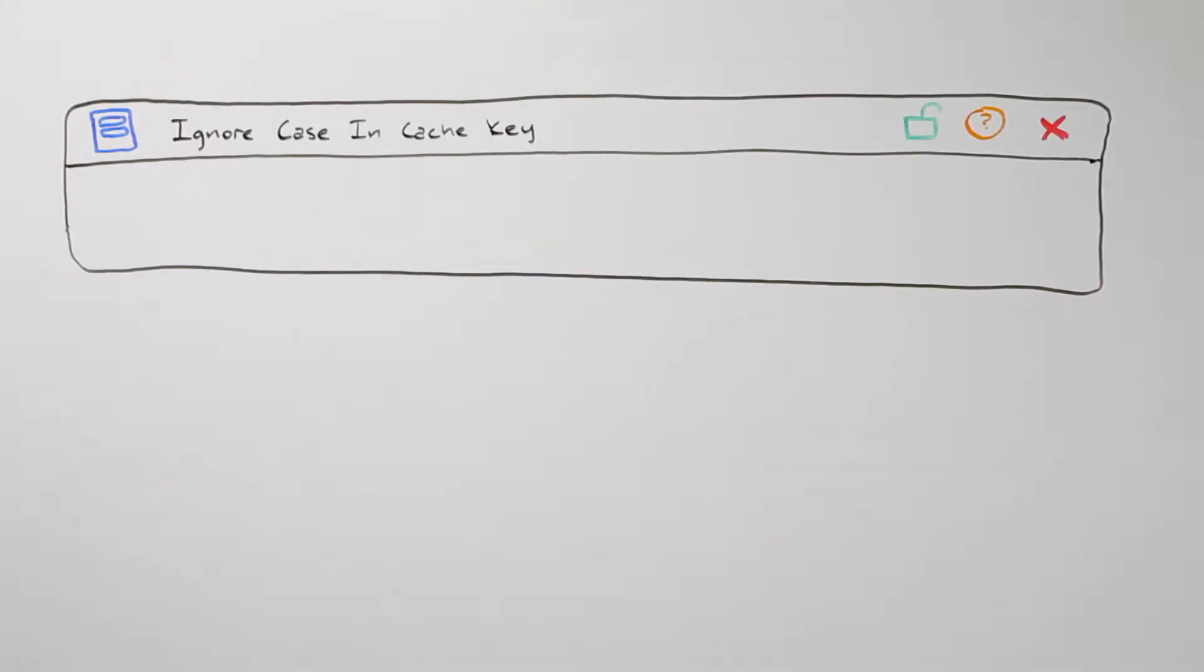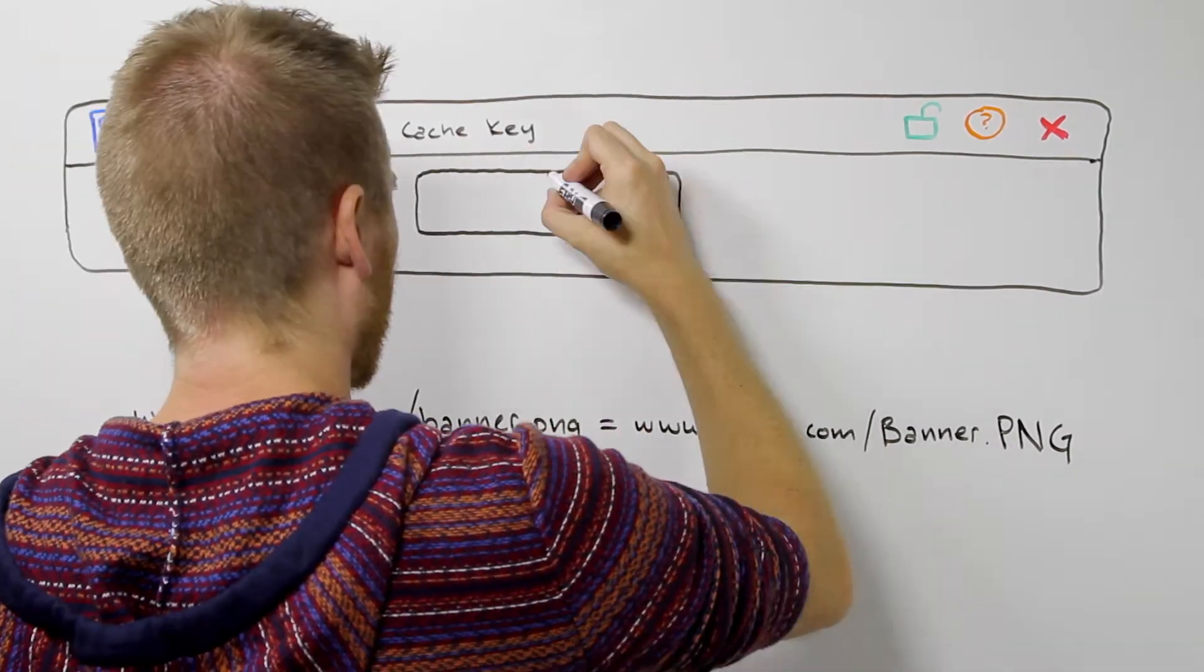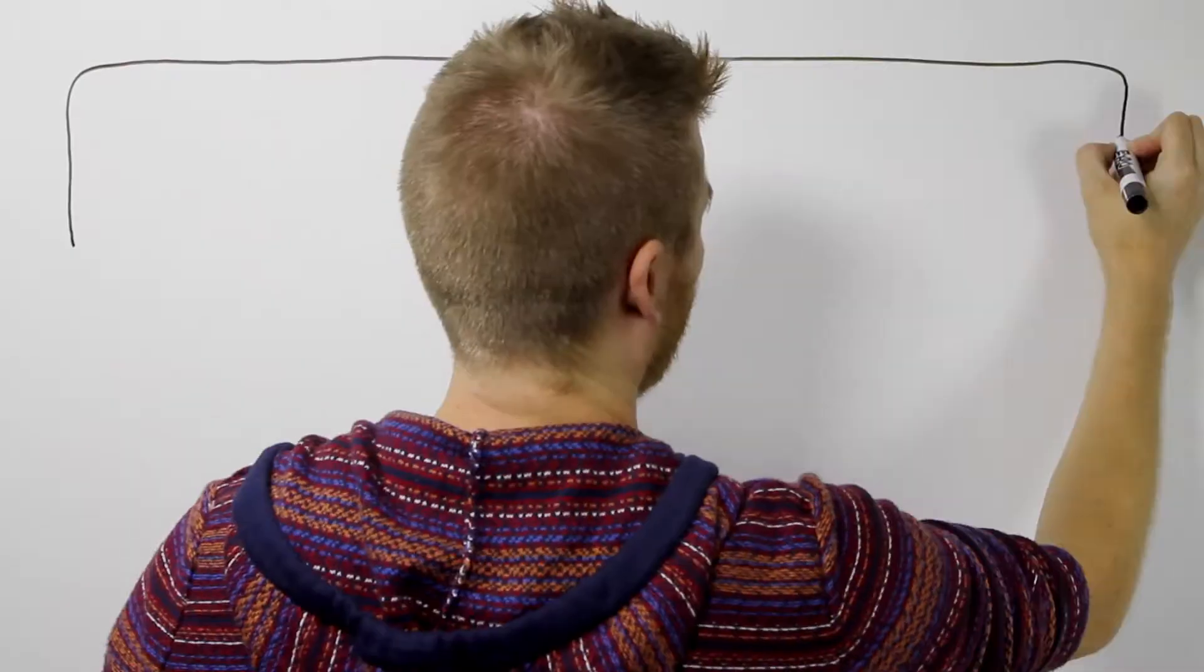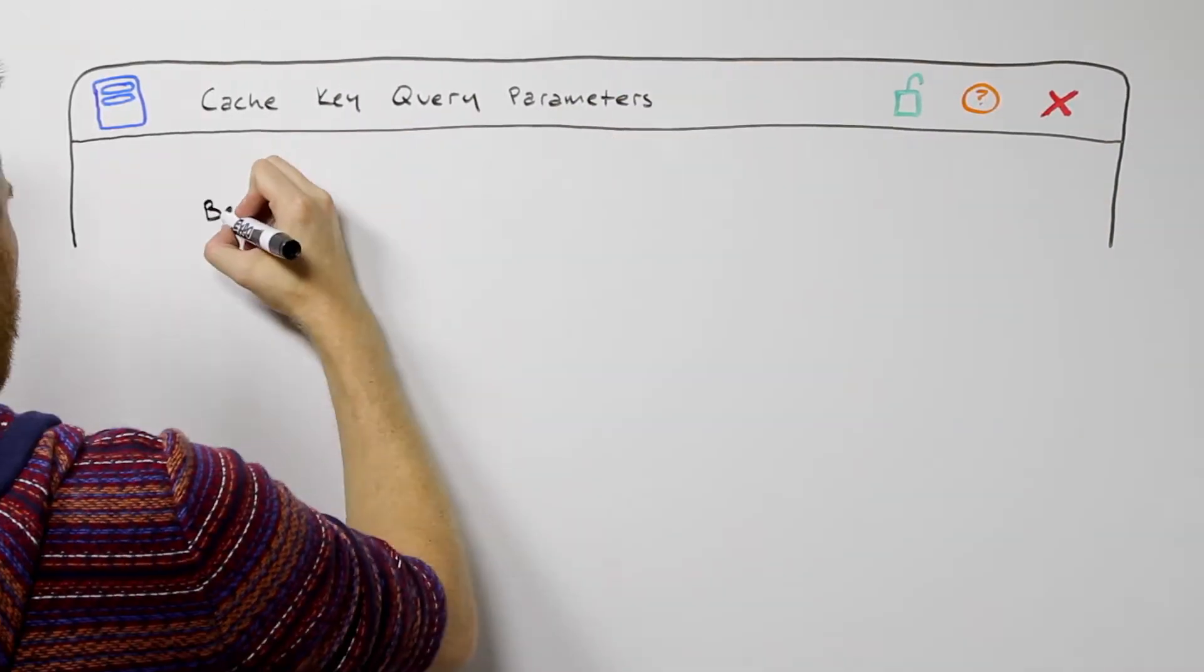There's also an included feature to specify whether the URL case should be honored or ignored in the cache key. Next, let's take a look at how query parameters might affect your cache key.